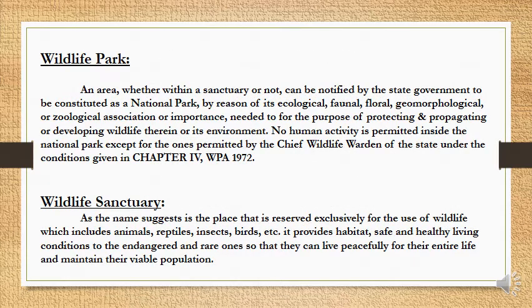What does it mean by Wildlife Parks? A Wildlife Park is an area, whether within a sanctuary or not, that can be notified by the state government to be constituted as a national park, by reason of its ecological, faunal, floral, geomorphological or zoological importance, for the purpose of protecting or developing wildlife therein or its environment. Human activities are prohibited inside national parks except those permitted by the Chief Wildlife Warden of the state under Chapter 4, Wildlife Protection Act 1972. In simple words, a Wildlife Park is a large area of natural land protected by the government because of its natural beauty, plants or animals.